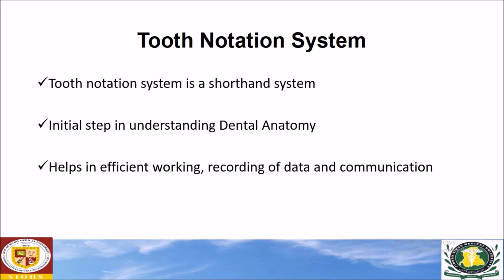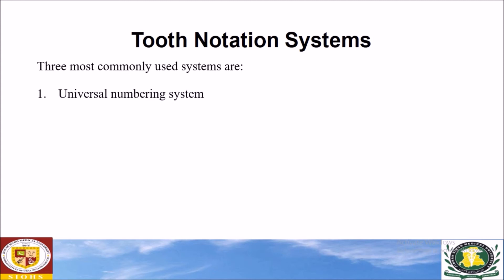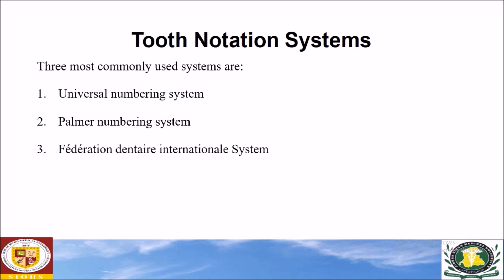It helps in efficient working, recording of data, and communication. There are three most commonly used notation systems for both deciduous and permanent dentition: the Universal Numbering System, the Palmer Notation System, and the FDI (Fédération Dentaire Internationale) system. The details about these three numbering systems are provided in separate videos.